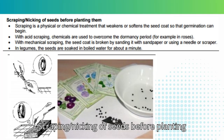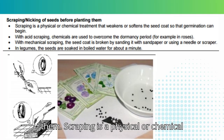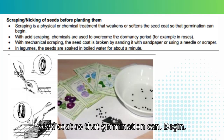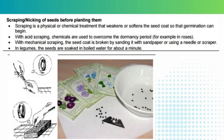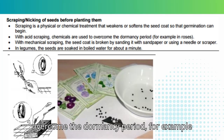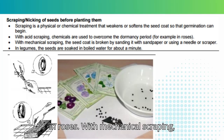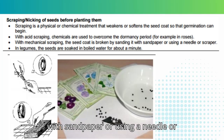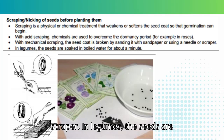Scarification or nicking of seeds before planting them. Scarification is a physical or chemical treatment that weakens or softens the seed coat so that germination can begin. With acid scarification, chemicals are used to overcome the dormancy period, for example in roses. With mechanical scarification, the seed coat is broken by sanding it with sandpaper or using a needle or scraper. In legumes, the seeds are soaked in boiled water for about a minute.